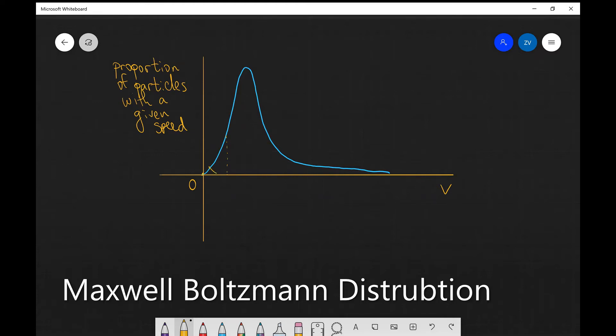So one of the things that we firstly notice about this distribution is that relatively few particles have low speeds.